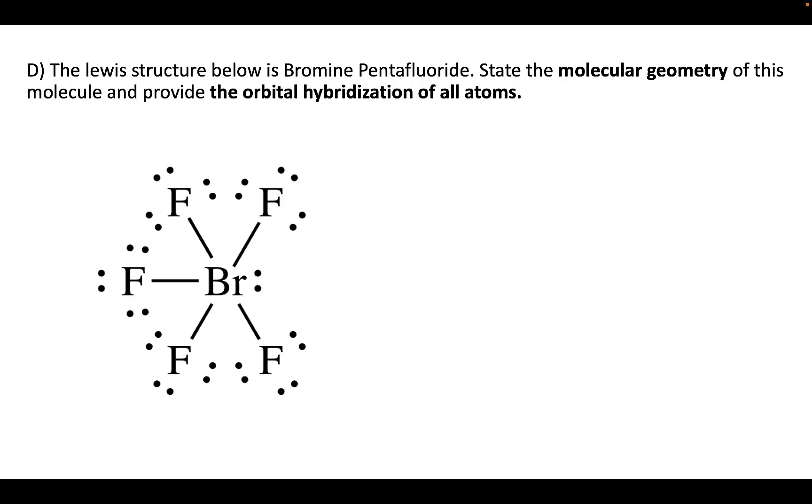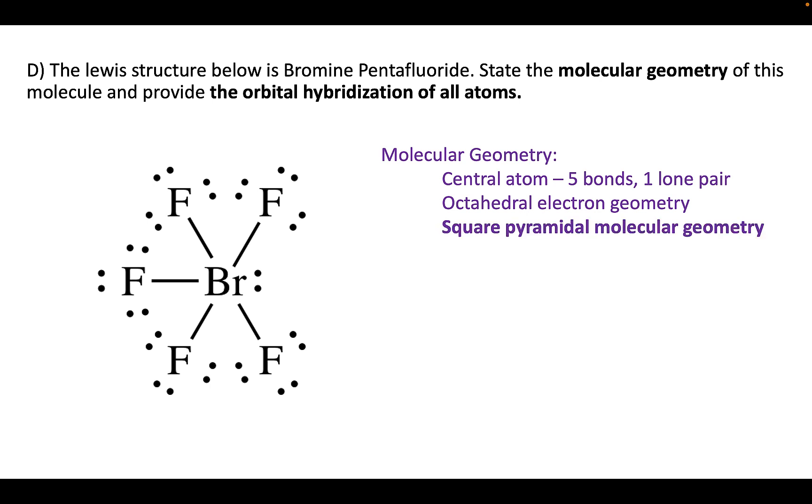For part D, we're looking at this Lewis structure, bromine pentafluoride. We want to know the molecular geometry and the orbital hybridization of all of these atoms. If we look at this one, we want to determine the molecular geometry and note that there are five bonds and one lone pair. That means that the electron geometry is going to be octahedral to accommodate for six domains, but the molecular geometry is square pyramidal, so basically that octahedral geometry with one bond removed makes it a pyramid with a square base, hence the name.